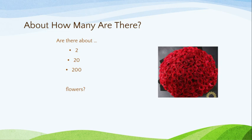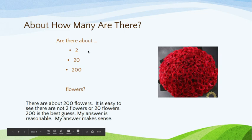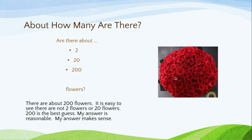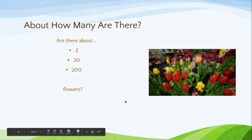Looking at this picture, about how many are there? Are there about 2, 20, or 200 flowers? I'm not going to spend time counting each individual flower — I'm just going to use my best guess. I can say there are about 200 flowers. It is easy to see that there are not just 2 flowers or even just 20 flowers. So 200 is the best guess, and my answer is reasonable. I was able to eliminate 2 and 20 just by a quick glance and a little more thought.